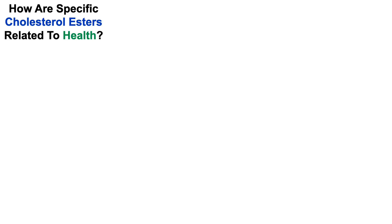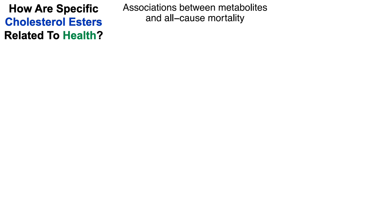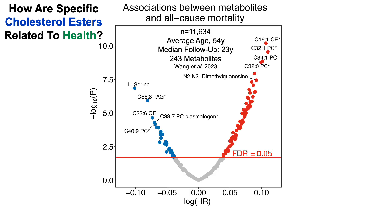Let's look at how specific cholesterol esters are related to health by examining associations between metabolites and all-cause mortality risk. This study included more than 11,000 people with an average age of 54 at baseline, a median follow-up of 23 years, and an analysis of 243 metabolites — tracking who was alive or dead after that follow-up and which metabolites were associated with increased or decreased all-cause mortality risk.